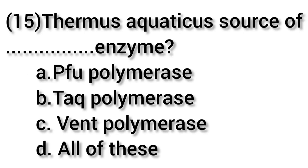The final question: Thermus aquaticus is the source of which enzyme? Option A Pfu polymerase, option B Taq polymerase, option C Vent polymerase, and option D all of these. The answer is option B — Taq polymerase. Thermus aquaticus is the source of Taq polymerase. That's all about our video — thanks for watching, please subscribe to the channel and don't forget to like the video.